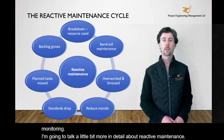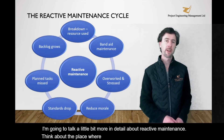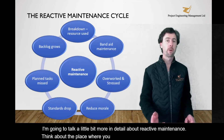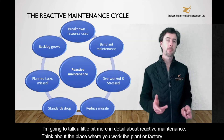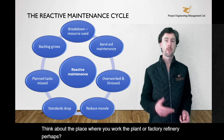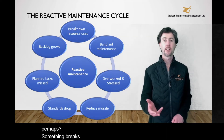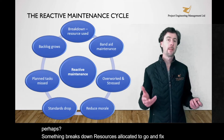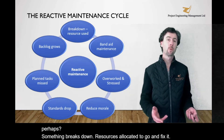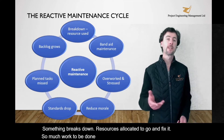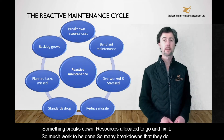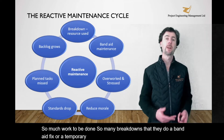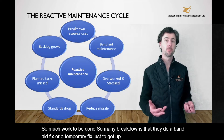Think about the place where you work — a plant, a factory, a refinery perhaps. Something breaks down, resources are allocated to go and fix it. So much work to be done, so many breakdowns that they do a bandaid fix or a temporary fix just to get up and running as fast as possible.